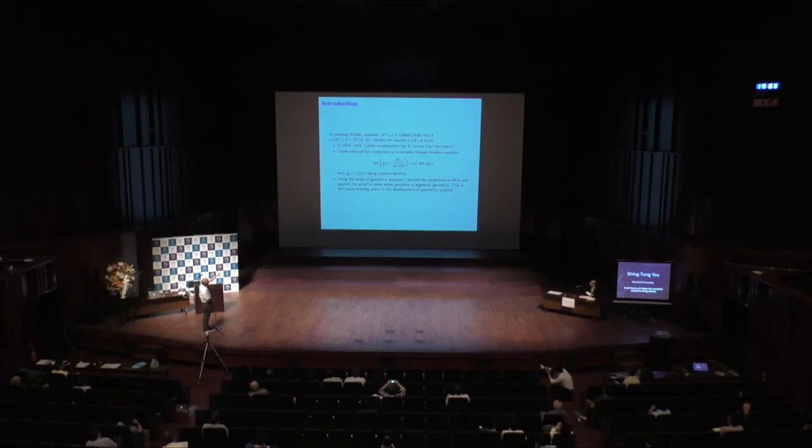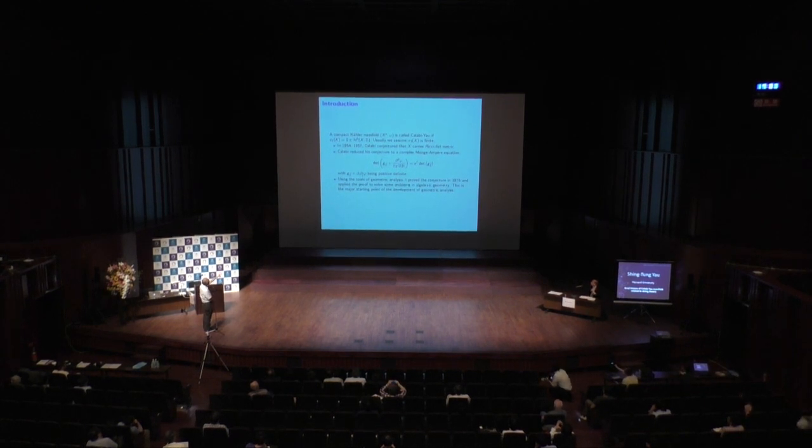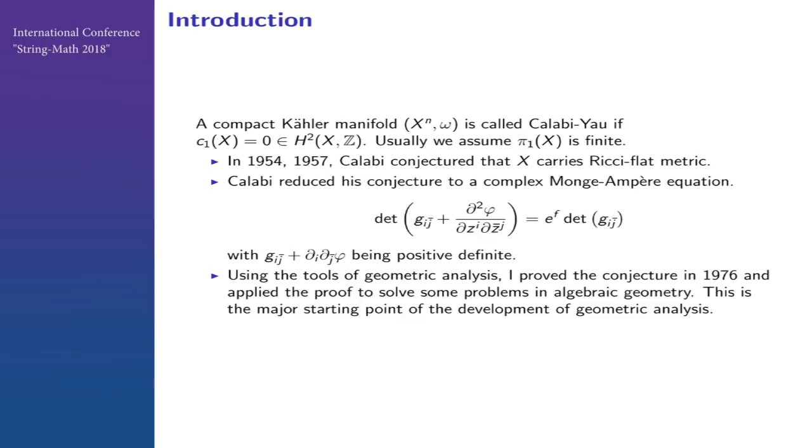The Calabi conjecture requires solving this equation: det(gij) = exp of partial squared phi over partial zi partial zj bar, where phi is unknown. This is a very complicated non-linear equation. At that point, nobody thought about solving equations on manifolds.